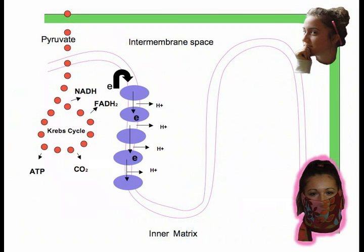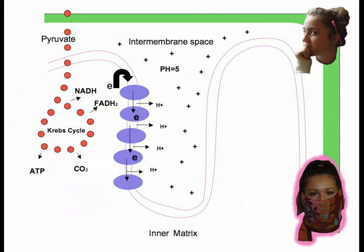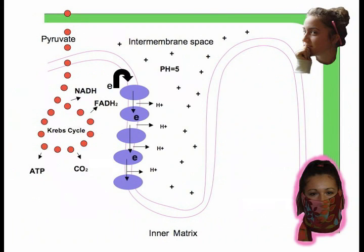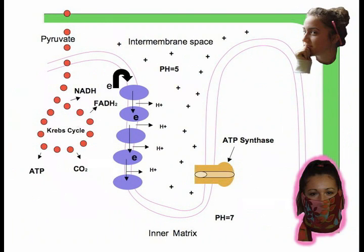Great job Susie, you're getting it. Do you know what happens next? Next is the formation of the chemiosmotic gradient. This begins when the inter-membrane reaches a pH of 5 and the inner matrix reaches a pH of 7. The ATP synthase is now activated and it forms a channel which allows the already built-up protons to pass through the channel, moving back into the inter-matrix.